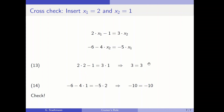3 equals 3 — check. Then for equation 2: minus 6 minus 4 times x2 should equal minus 5 times x1. The left hand side equals minus 10, and we have confirmed that x1 equals 2 and x2 equals 1 solves this system of equations.